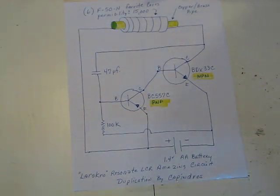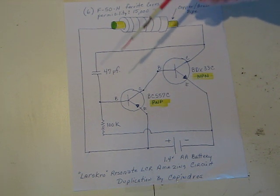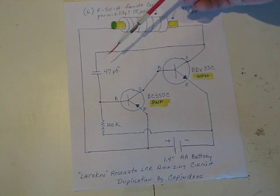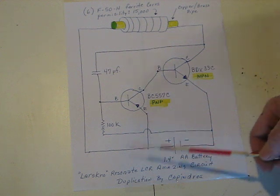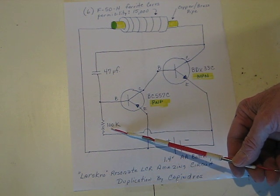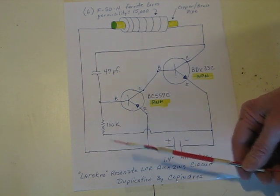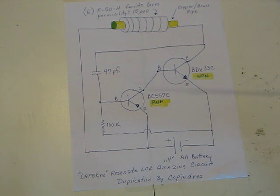What we have here is the pipe and the six ferrite beads. These ferrite cores, the ones I used are F-50-H. They have a permeability of 15,000. The capacitor used in the circuit is a 47 picofarad, 100,000 ohm resistor I mean.